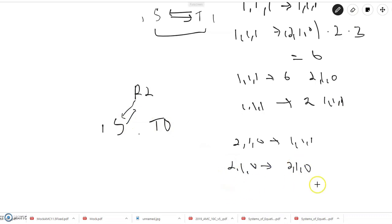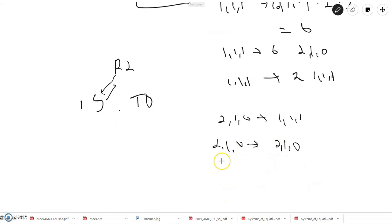And if you go from R, if R gives its money to T, and S gives her money to R, then you'll go from 2, 1, 0 to 2, 1, 0.